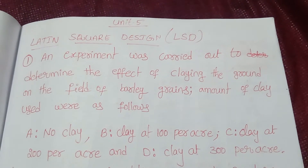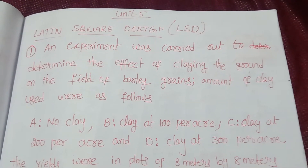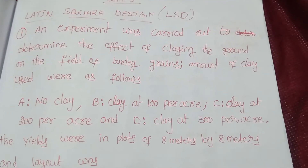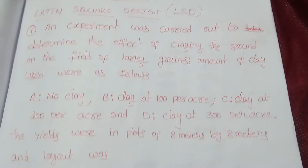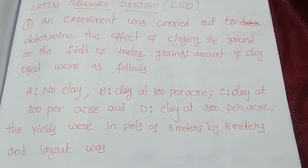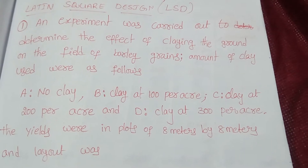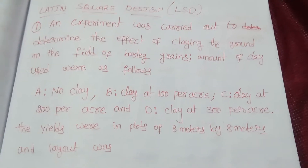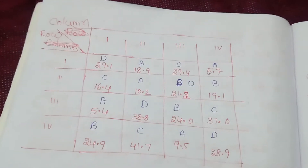Hello students. In this video I will explain Unit 5: Latin Square Design problem. An experiment was carried out to determine the effect of claying the ground on the yield of barley grains. The amounts of clay used were: A - no clay, B - clay at 100 per acre, C - clay at 200 per acre, and D - clay at 300 per acre. The yields were in plots of 8 meters by 8 meters. The given layout is shown here.